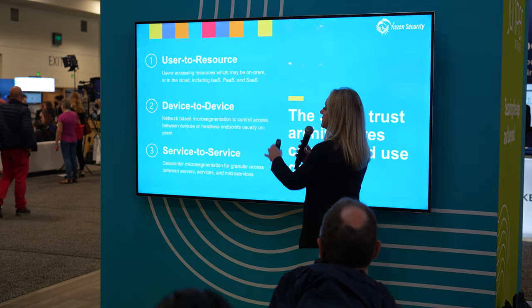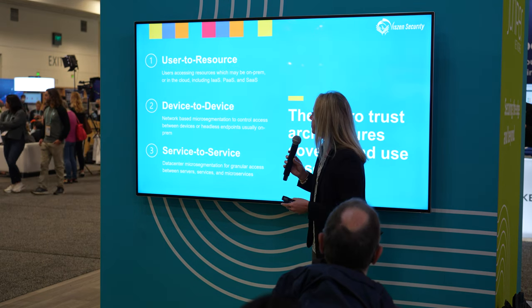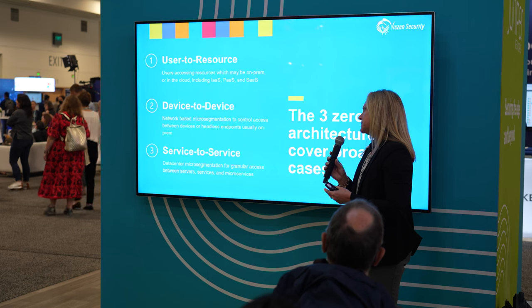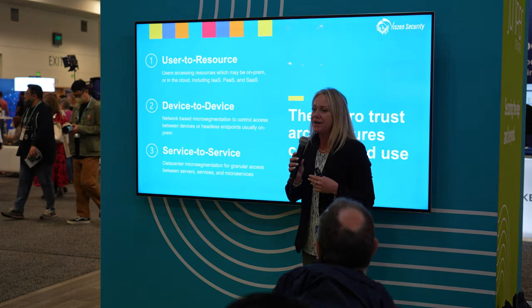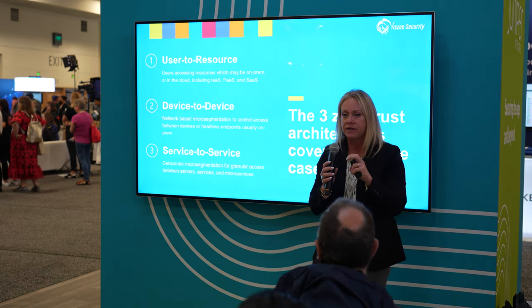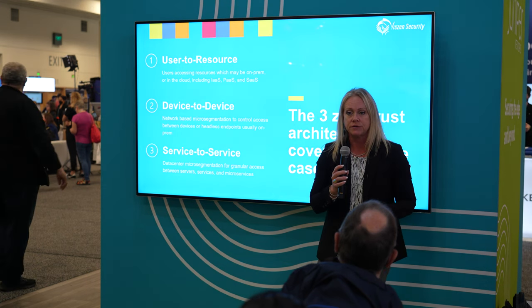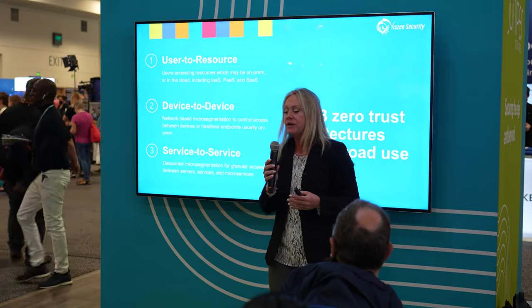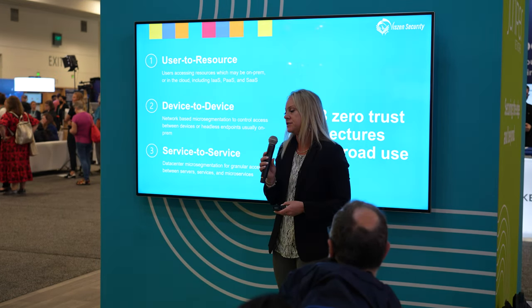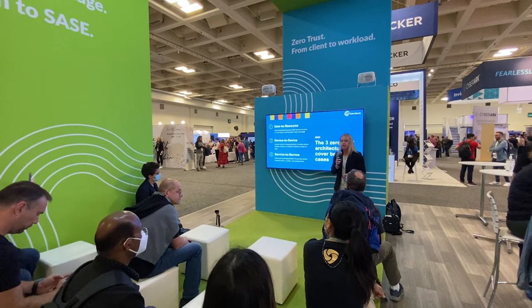The device-to-device bucket covers headless devices — OT and operational technology environments, biomedical devices, IoT devices, or assets that don't have a traditional operating system and don't have a user attached to them. Most traditional network access control products and their evolution fall here, and therefore most vendors from the networking space with NAC-like products have focused their attention there. The third bucket is service-to-service — workload micro-segmentation. When people talk about micro-segmentation, they usually mean this: server-to-server, service-to-service, application-to-application, or serverless architectures and micro-services. The product landscape and how we implement these three buckets is very different, with not a lot of crossover between them.